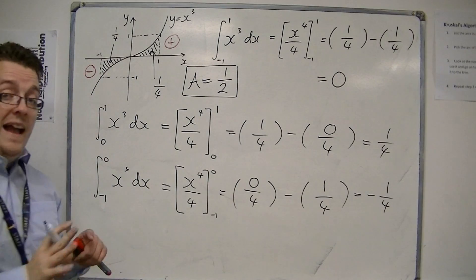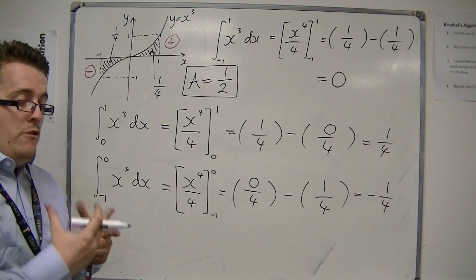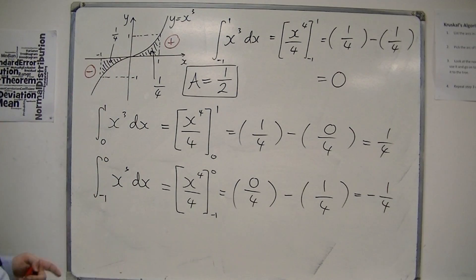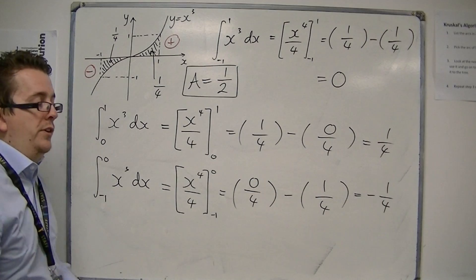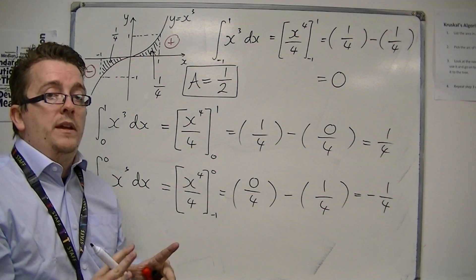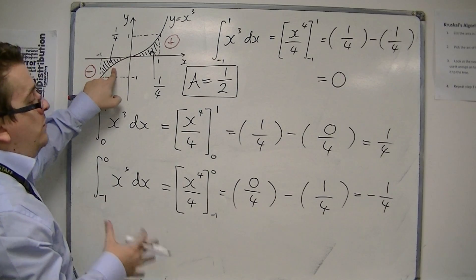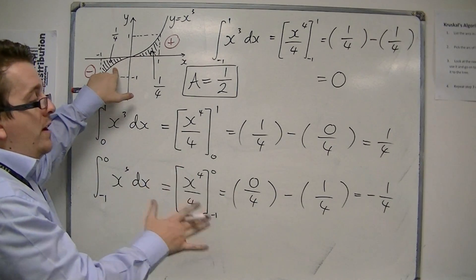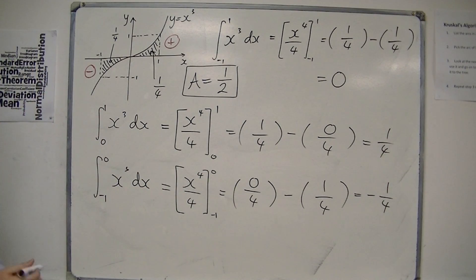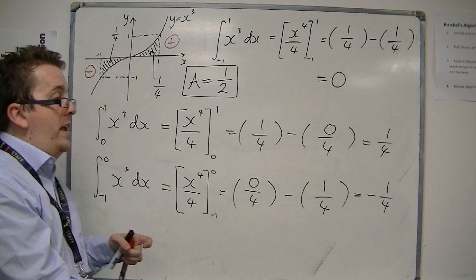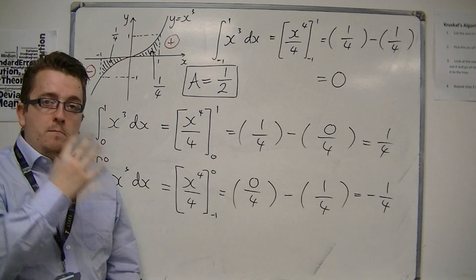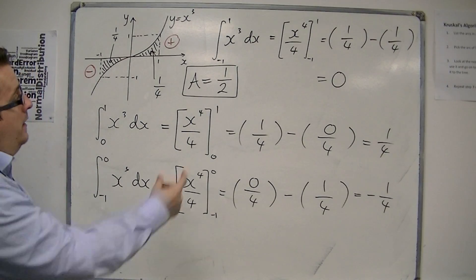So that's the actual area. So area cannot be negative. An integral can be negative, as we can see here. We get minus 1 quarter. But the actual area of this region cannot be negative. And so while the integral is minus 1 quarter, the area is actually 1 quarter. So keep this in mind when we deal with areas that are under the x-axis, and make sure you don't make a silly mistake like this.